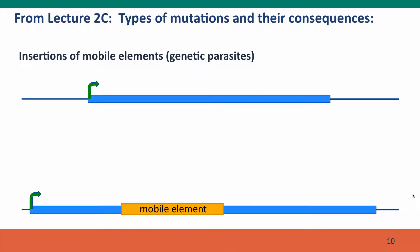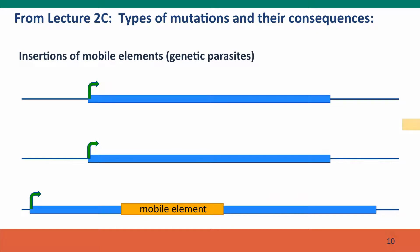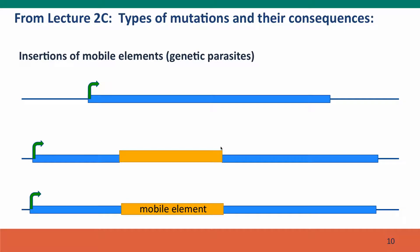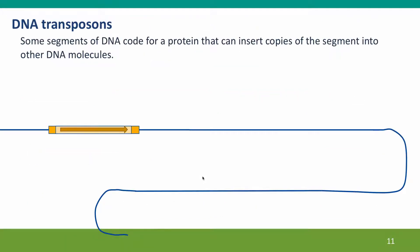Here's another slide from Module 2 on how genetic elements insert. This is a very simple schematic showing that the element comes along, a copy breaks the chromosome, and it inserts in. This is shown in more detail in the next slide for DNA transposons — the kinds of mobile elements that are encoded in DNA and that function as DNA.